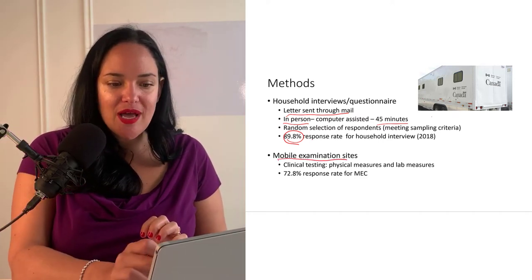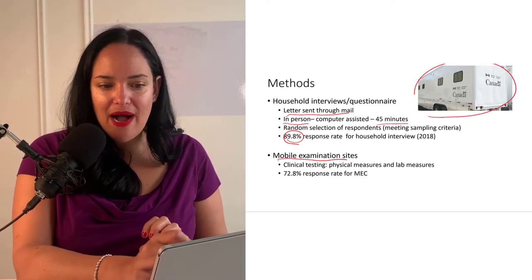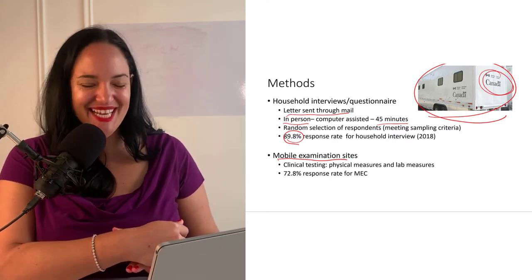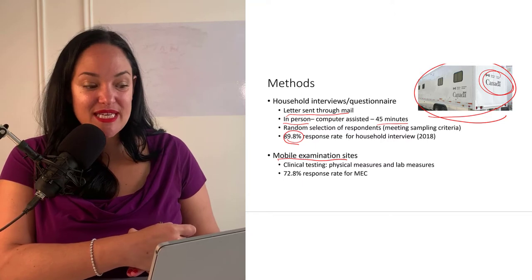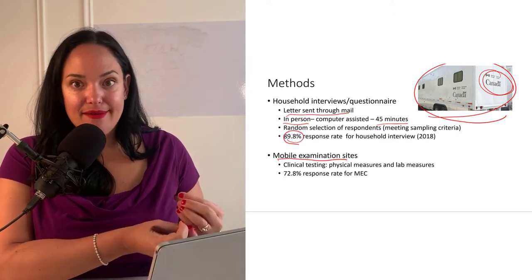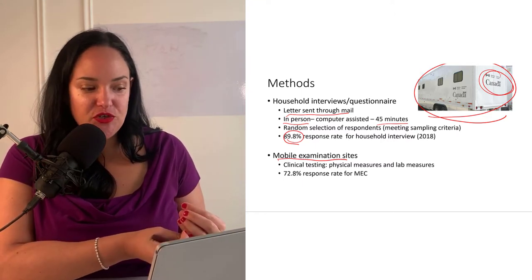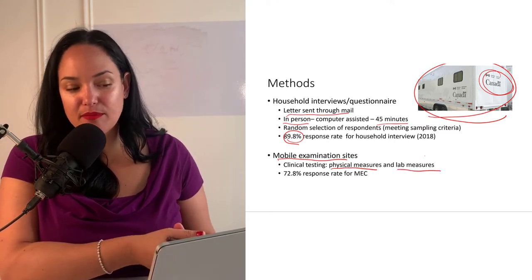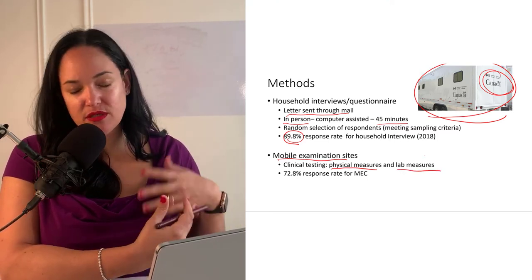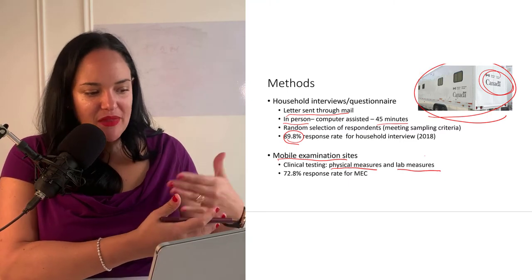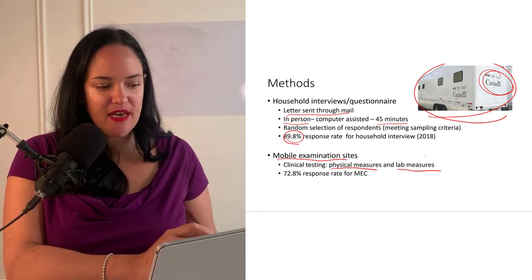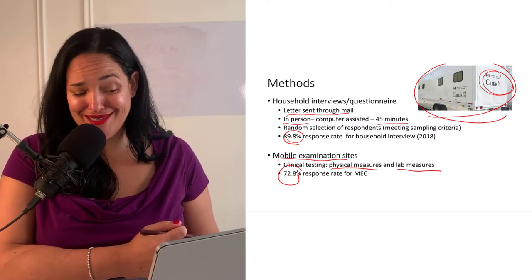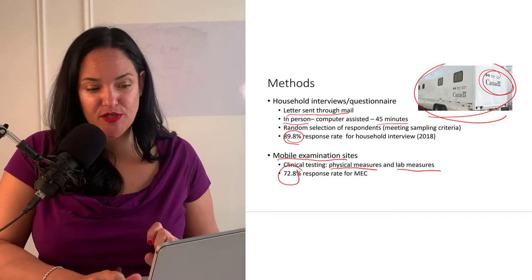There are also mobile examination sites — if you ever see a bus-like vehicle sitting outside somewhere, that is the collection center. They do physical measures and lab measures: they take blood tests and can also measure things like weight. For this component, the response rate is a little bit lower, but still quite high.